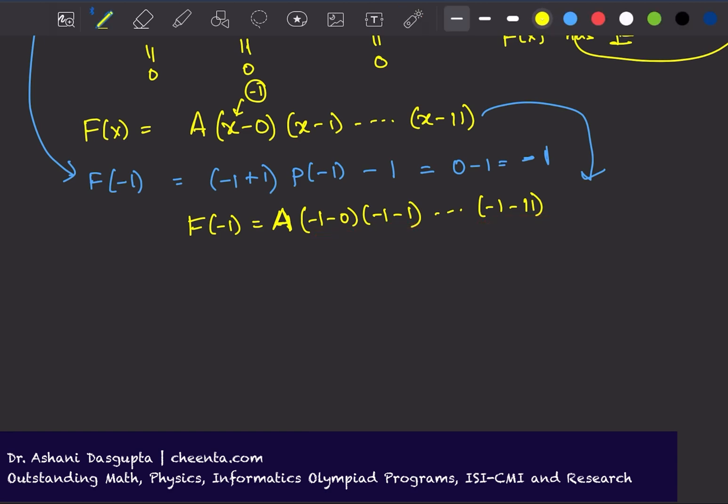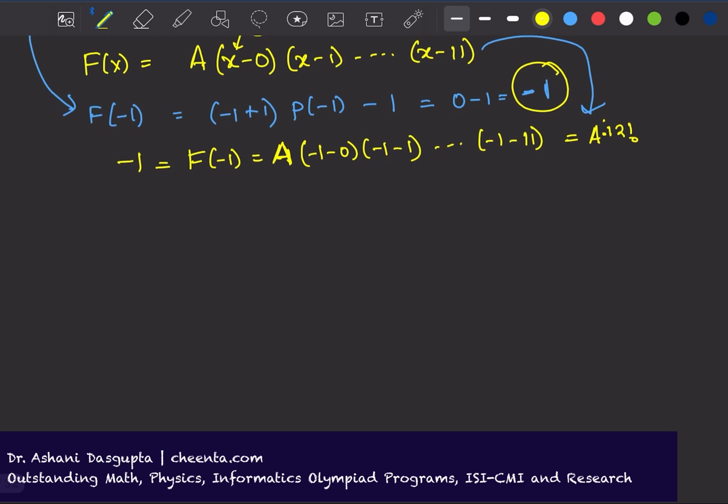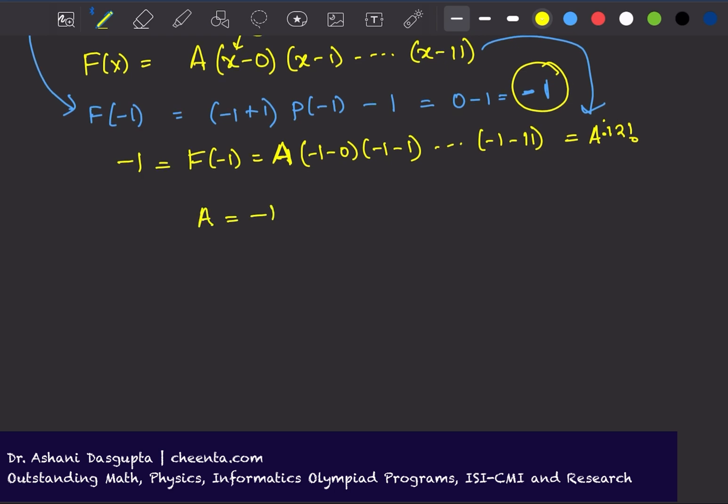I get A times 12 factorial, which I know from here is negative 1. So I get a value of A which is minus 1 by 12 factorial. That's the value of A.